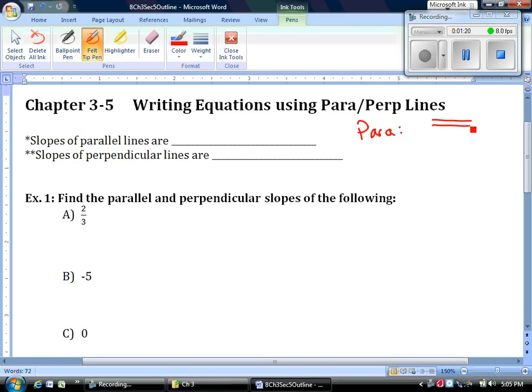They can be horizontal, vertical, any direction you want. Perpendicular lines are two lines that intersect and make a right angle. Again, they can intersect in any direction as long as they make a right angle.